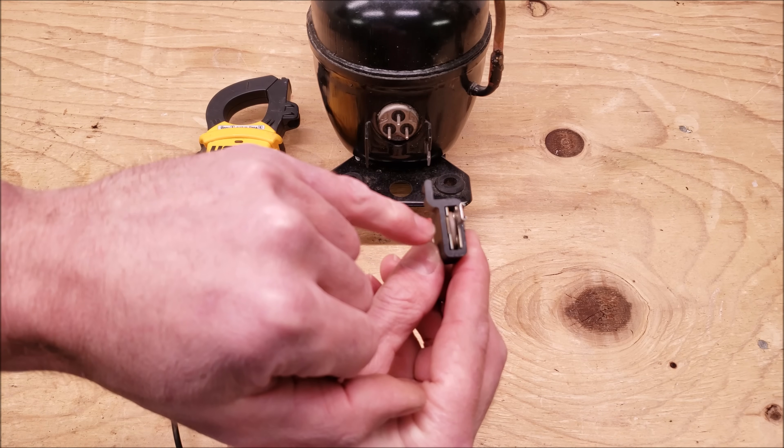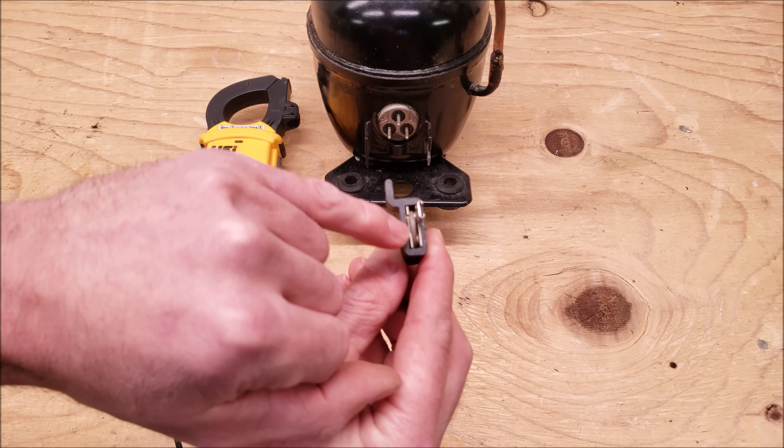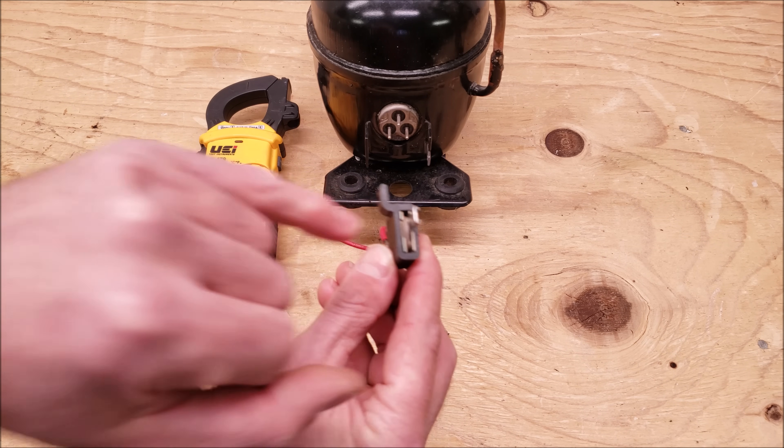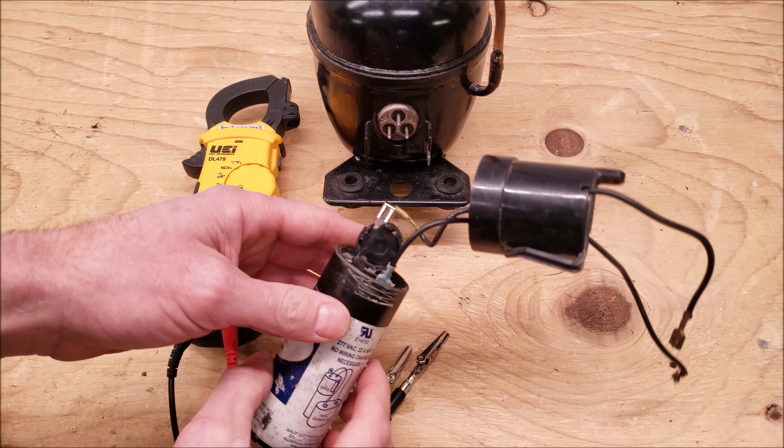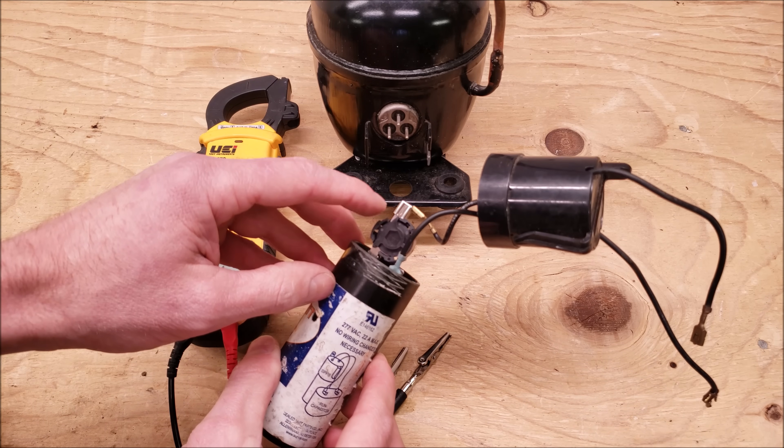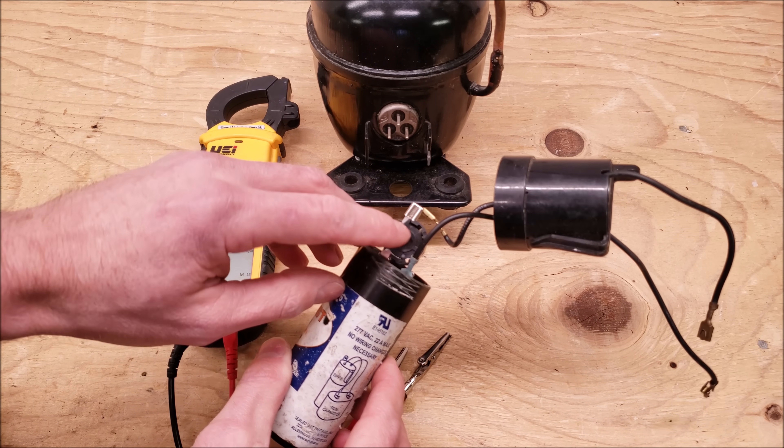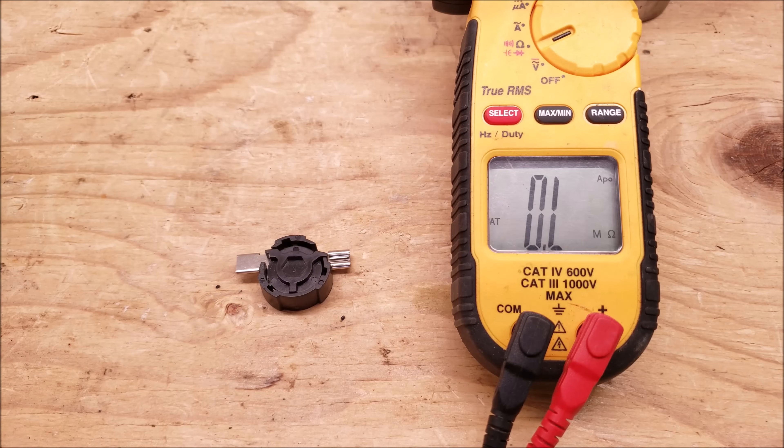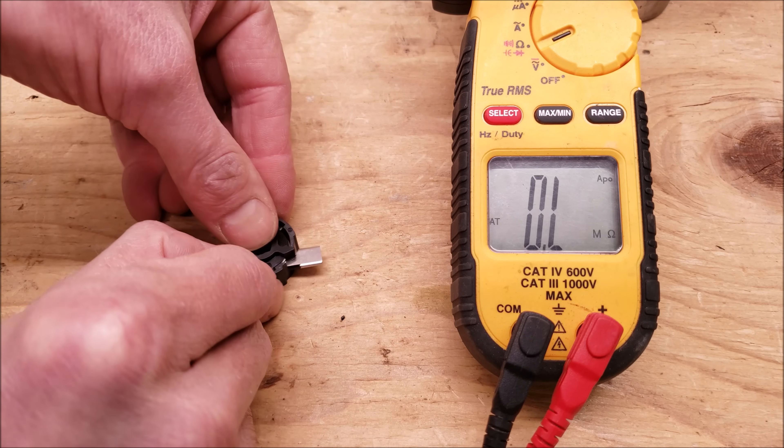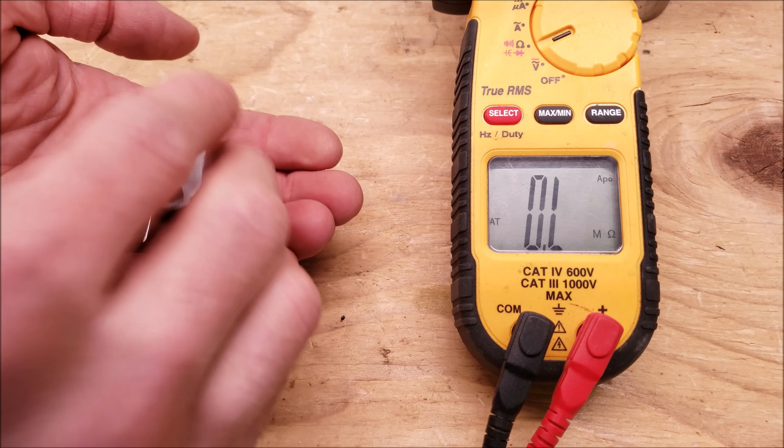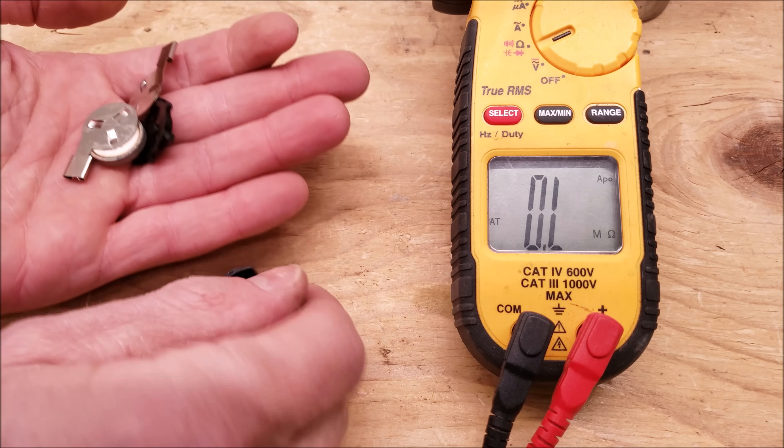So inside here you can see that the pill type PTC is inside. I'm going to go ahead and dismantle this one right here and then we're going to go ahead and test the resistance value of the actual pill itself. These are pretty easy to get apart. You just press down on it, turn, and it just comes right apart.